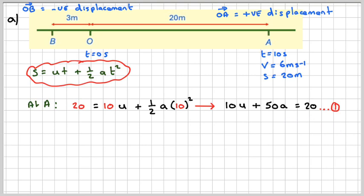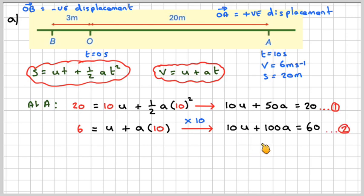We'll call that equation 1. We also know that the velocity is equal to U plus AT, and the velocity when T is 10 is 6 metres per second. So we can say that 6 equals U plus A times 10. We're going to multiply that by 10 because I want to make the U's the same. So multiplying by 10, I'm going to get 10U plus 100A equals 60. We're going to call that equation 2.